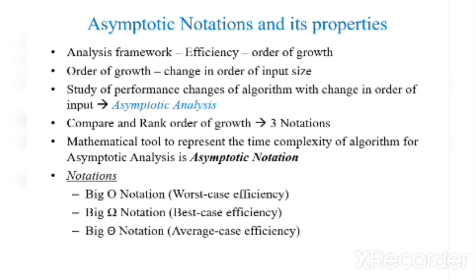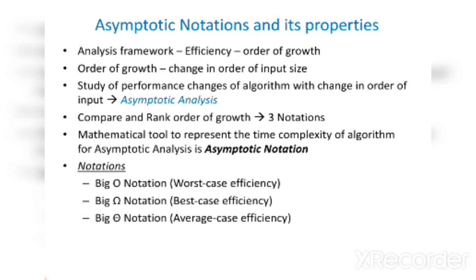We are going to see three notations: Big O notation, which defines the worst case efficiency; Big Omega notation, which defines the best case efficiency; and Big Theta notation, which defines the average case efficiency. Worst case efficiency is defined as the maximum number of steps taken on any instance of size n. Average case efficiency is defined as the average number of steps taken on any instance of size n.